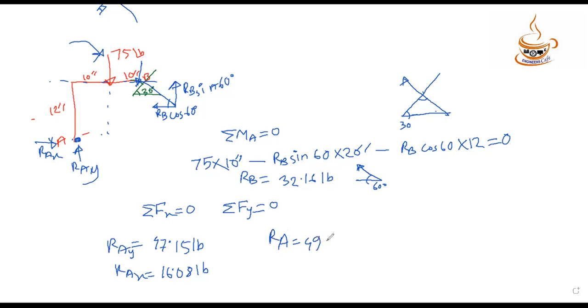The resultant force Ra equals 49.8 pounds. To find the angle, we use theta equals inverse tangent of Ray divided by Rax. Thank you very much for joining us today.